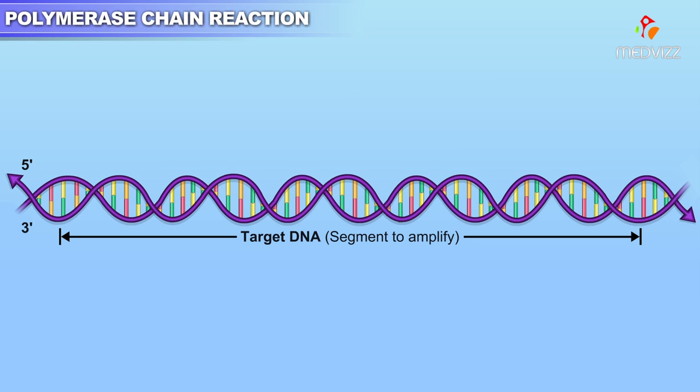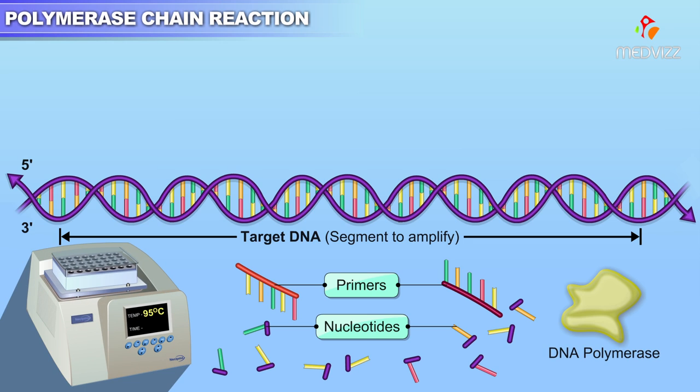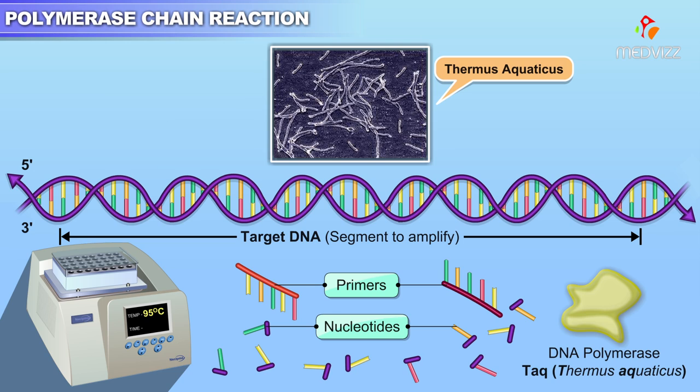PCR requires specific oligonucleotide primers and plenty of nucleotides for DNA polymerization. It also requires a heat-stable DNA polymerase because PCR requires repeated cycles of heating the solution to 95 degrees Celsius. The polymerase Taq from the thermophile Thermus aquaticus is often used for this purpose.